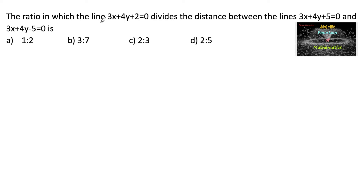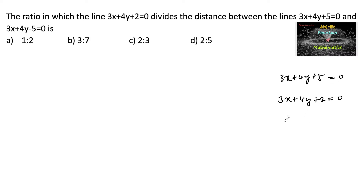The ratio in which the line 3x + 4y + 2 = 0 divides the distance between the lines 3x + 4y + 5 = 0 and 3x + 4y - 5 = 0. Here, clearly the coefficients of x and y are the same, so the ratio of coefficients of x and y will be the same, hence their slopes are equal. They are parallel lines — all three lines are parallel.